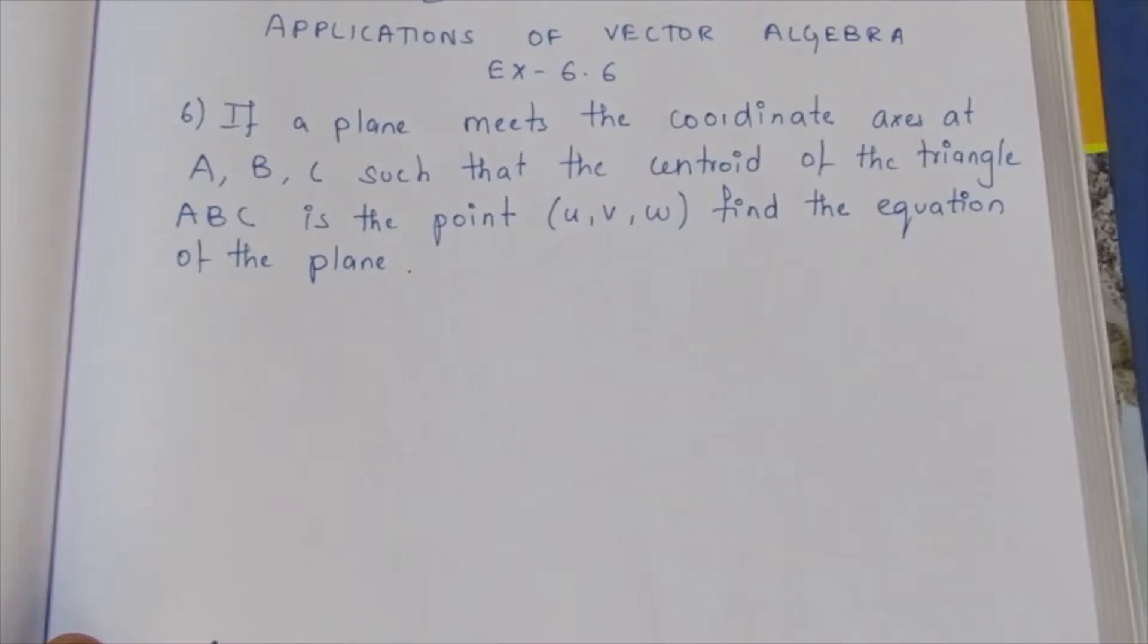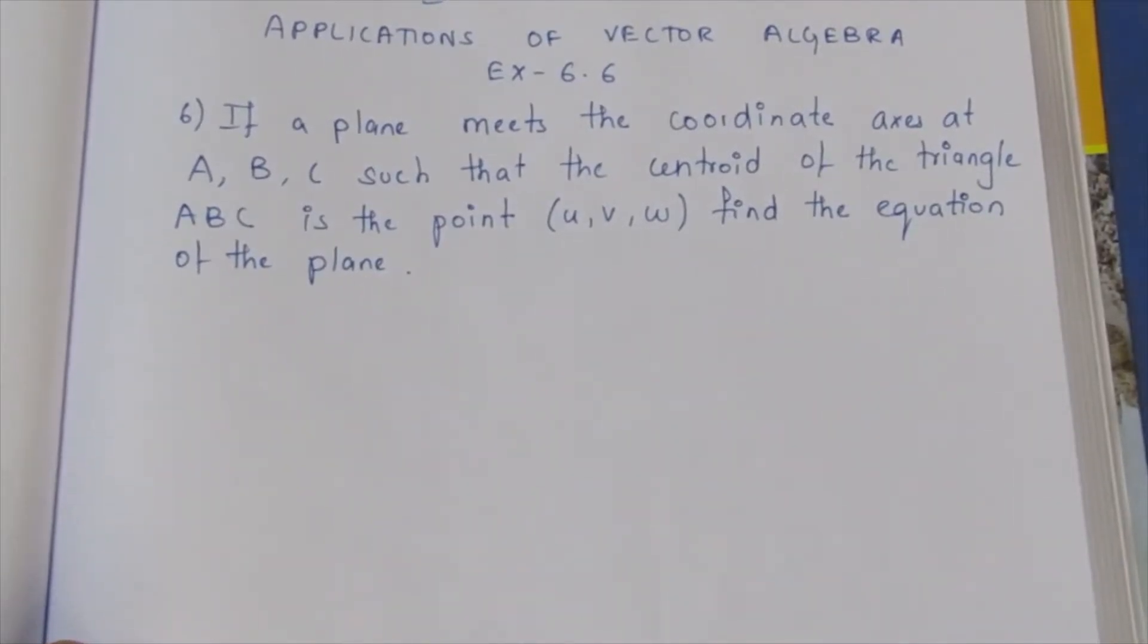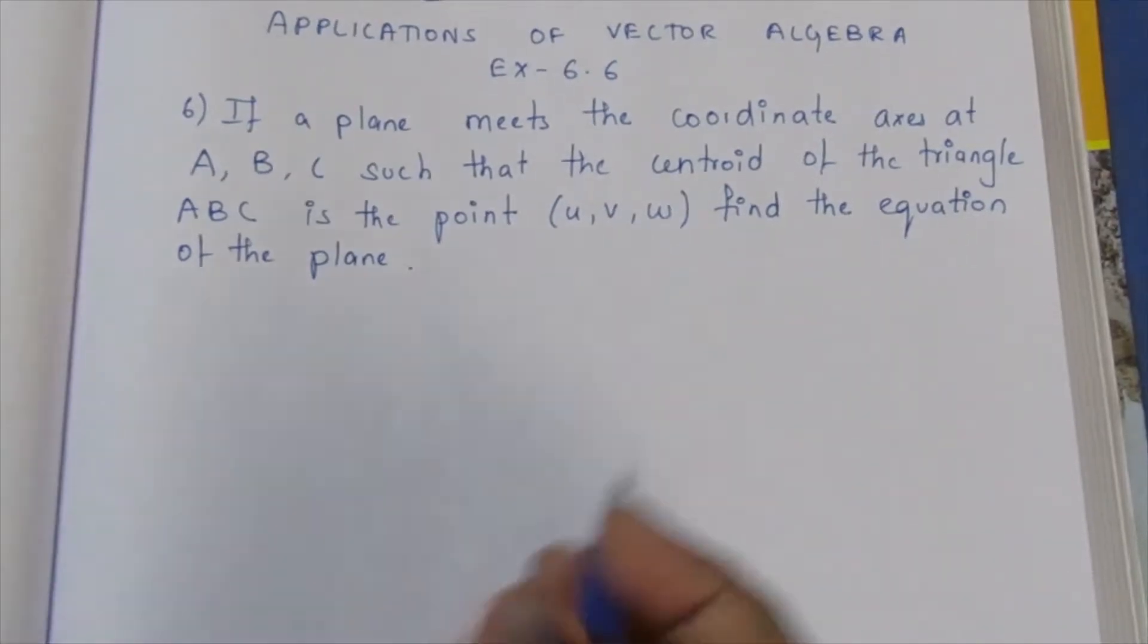The question states: If a plane meets the coordinate axis at A, B, C such that the centroid of triangle ABC is the point u, v, w, find the equation of the plane.